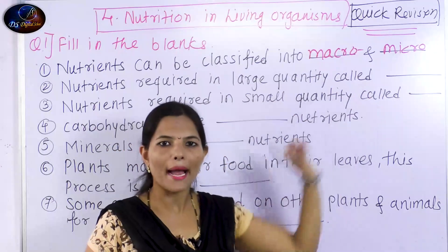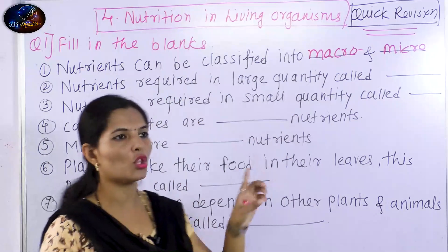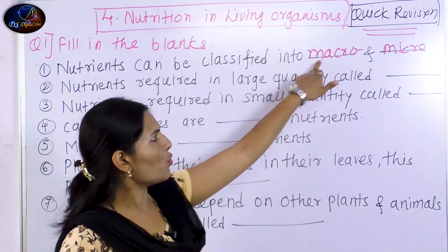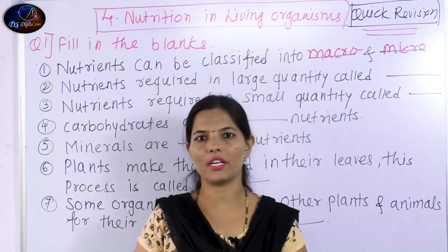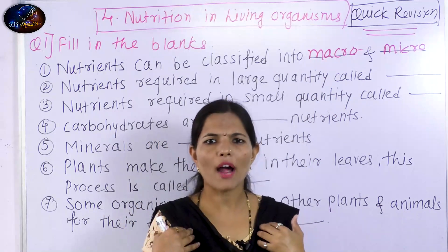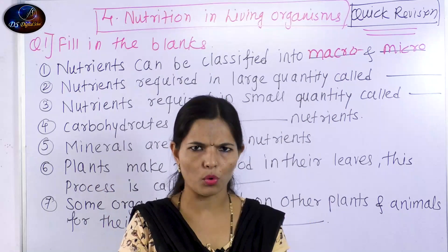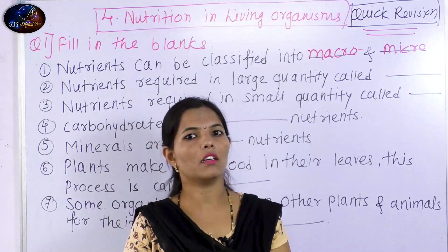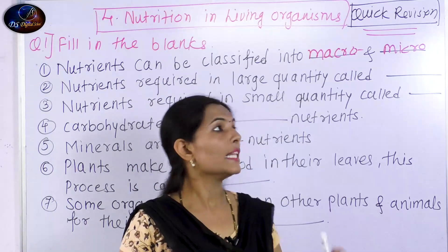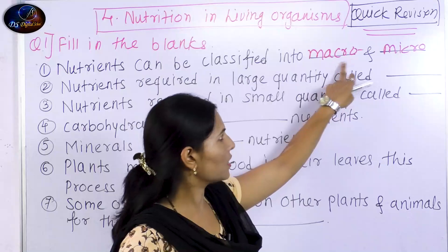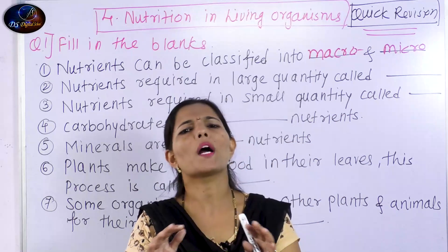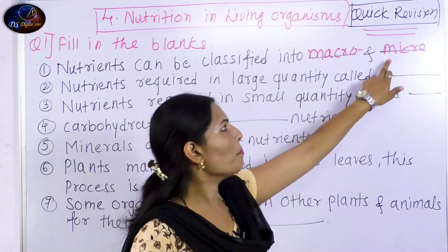Macronutrients are the nutrients which are required by our body in a large proportion. Micro means a very low amount is needed in our body — so micronutrients are required in a small quantity.